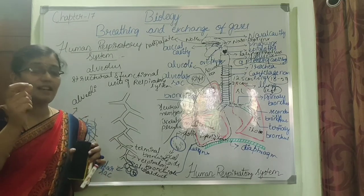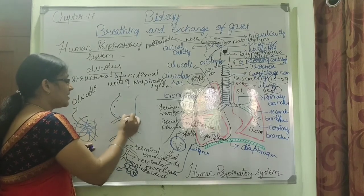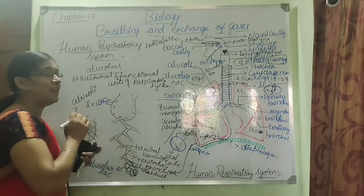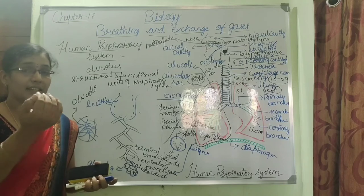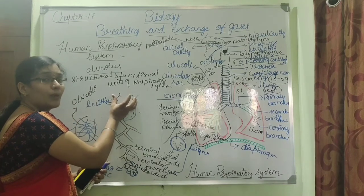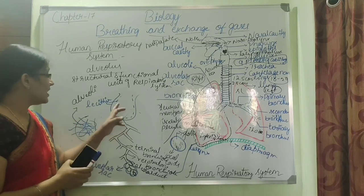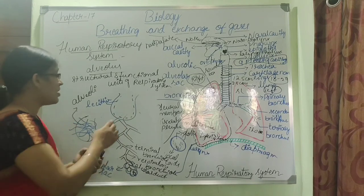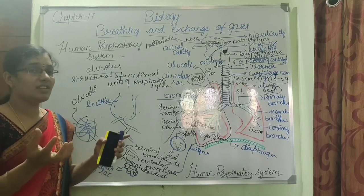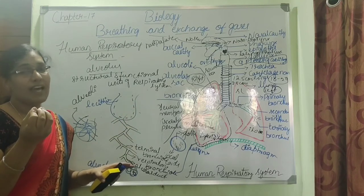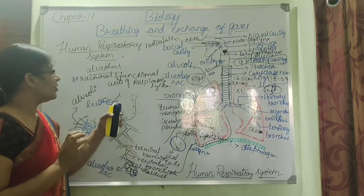The inner wall of the alveoli is lined by a substance called lecithin, which decreases surface tension and keeps the alveoli open, facilitating easy gaseous exchange. In some newborns, the lecithin lining may be absent, causing increased surface tension, closure of alveoli, collapse of the lungs, and death of the newborn.